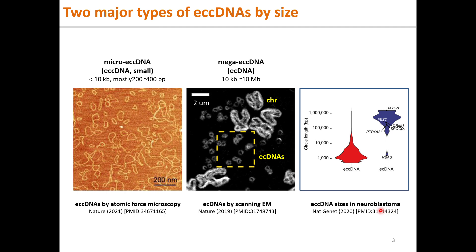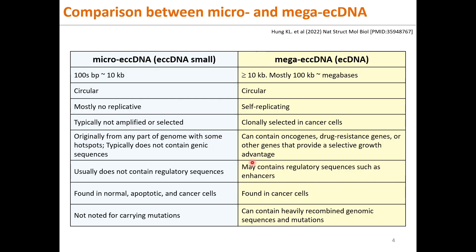Under atomic force microscopy or scanning electron microscopy, ECC DNAs and mega ECC DNAs are in circular forms. Besides the sizes, micro ECC DNAs and mega ECC DNAs have different properties. Most importantly, micro ECC DNAs cannot themselves replicate and are not amplified in the cells. They do not carry a full-length gene and typically do not contain regulatory sequences. Micro ECC DNAs can occur in normal, apoptotic, and cancer cells.